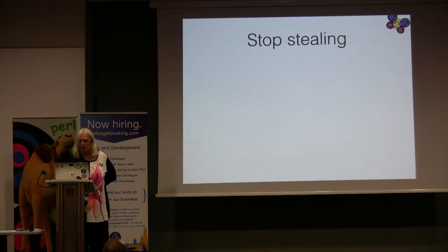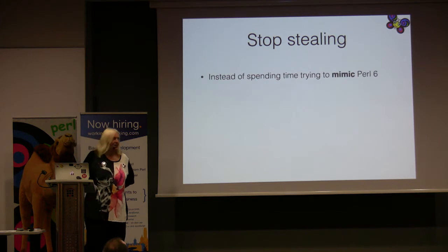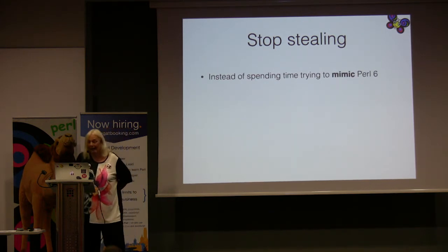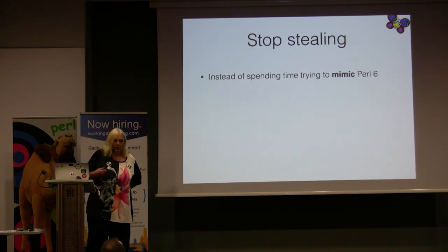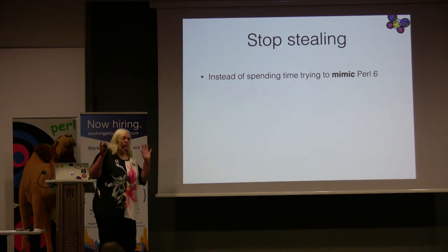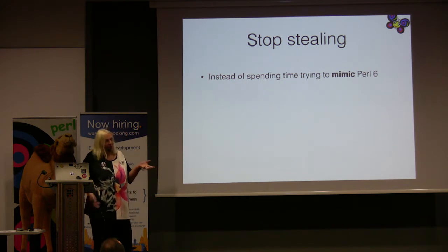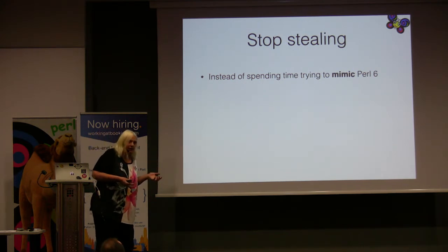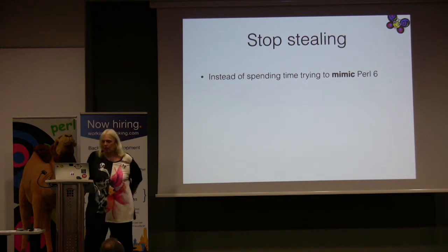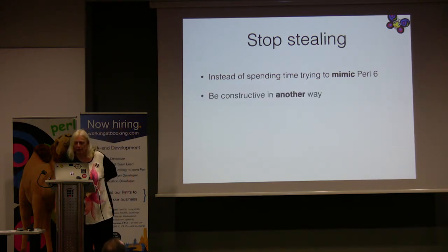I would also argue, stop stealing. Instead of spending time trying to mimic Perl 6 badly — I might add — think about subroutine signatures. Oh wow, we have subroutine signatures now in Perl 5! It's only like maybe 20% of the functionality, and it doesn't work on methods. I think you can be constructive in another way.